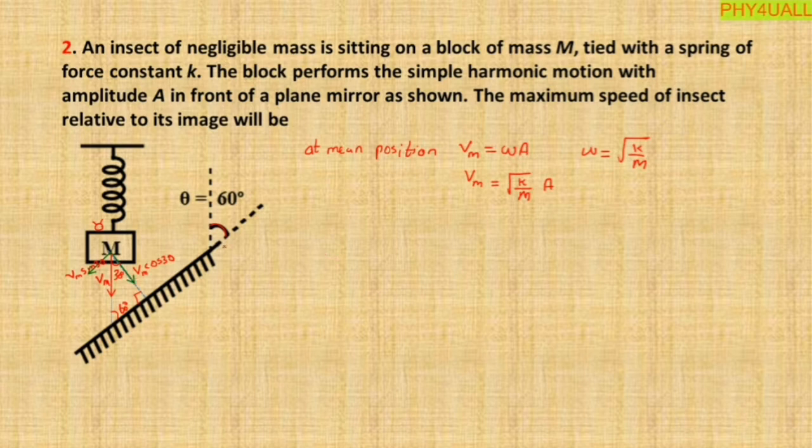Now we are going to calculate the relative velocity. The velocity of the object, that means the insect Vo, is equal to Vm cos 30. The velocity of image, that means the image of the insect, will also be the same because it is in the plane mirror, right? So Vm cos 30.